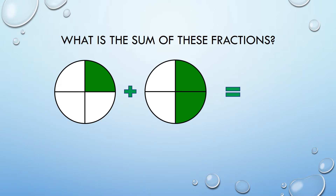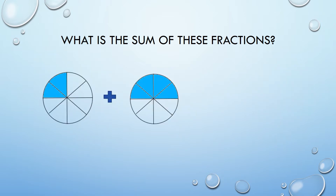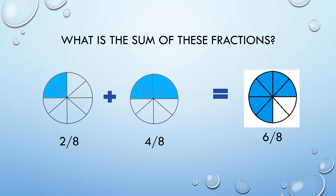Try it on your own. What is the sum of these fractions? One-fourth plus two-fourths. The answer is three-fourths. The denominator stayed the same — four — and the two and the one combine together to give us three. What is the sum of these fractions? Two-eighths plus four-eighths. The sum is six-eighths. The eight is the denominator and stayed the same. The four and the two combine together to give us six.